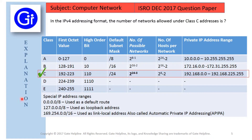In this question we are asked about the IPv4 addressing format and the number of networks allowed under class C addresses. Here in this table you can see that the first column is class — that is A, B, C, D, E. The second column is first octet values.